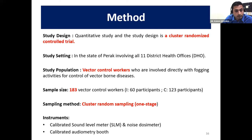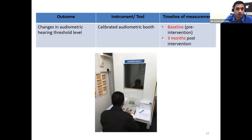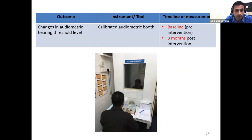The instruments used were a calibrated sound level meter for area monitoring, a noise dosimeter for personal noise monitoring, and a calibrated audiometry booth for audiometric testing, available at certain health clinics within the state of Perak. Outcomes assessed were changes in audiometric hearing threshold levels, measured prior to intervention at baseline as well as three months post-intervention. We started off with 183 participants and at the final count had a loss to follow-up of around 16.6%, which was well below 25%, so fairly good.